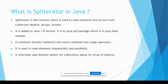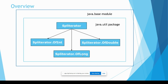Spliterator is an interface available in the java.util package, which is part of the java.base module. It has three sub-interfaces: Spliterator.OfDouble for primitive double arrays, Spliterator.OfInt for primitive int arrays, and Spliterator.OfLong for primitive long arrays.